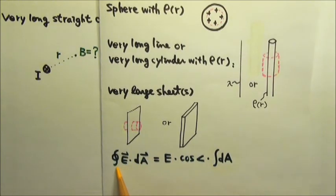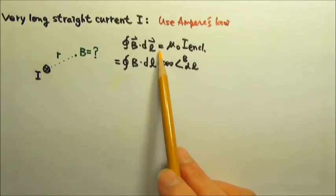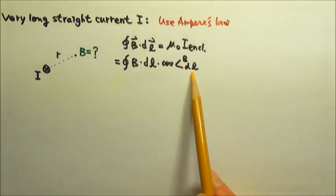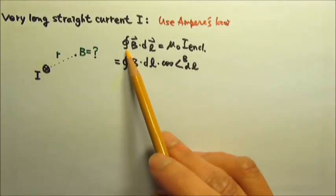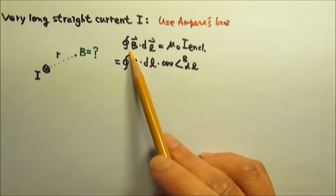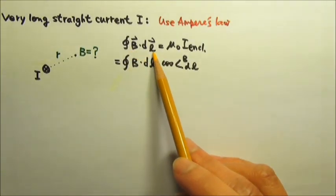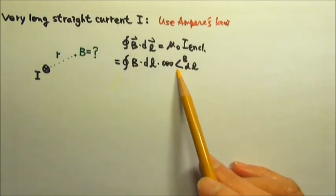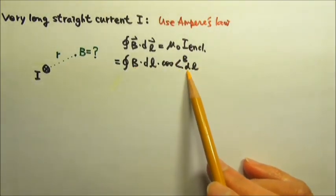Our goal is not to do any complicated integration. This dot product equals B times dl times cosine of the angle between B and dl. Our goal is to choose an Ampere's loop so that for any part of the loop with non-zero dot product, the magnitude of the magnetic field and the angle between B and dl are constants everywhere on the Ampere's loop.